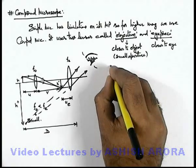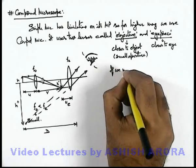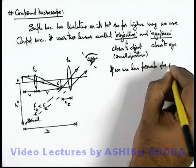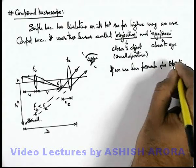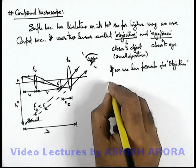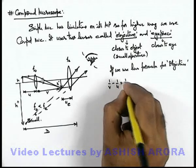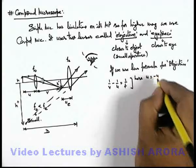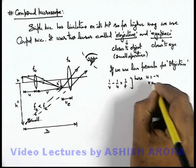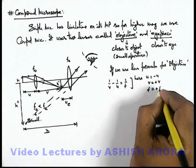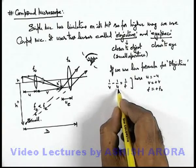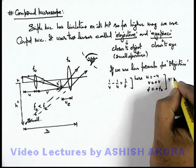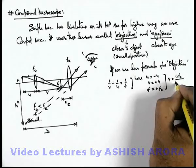So here, if we use the lens formula for the objective lens, we can write 1/v − 1/u = 1/f. The object distance is taken as −u, the image distance is +v, and the focal length is +f_o. On substituting these values, the value of v we get is: v = u·f_o / (u − f_o).